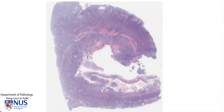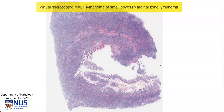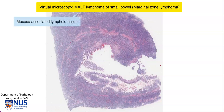Hello. This is a virtual microscopy slide of a case of MALT lymphoma of the small intestine or small bowel. MALT stands for mucosa-associated lymphoid tissue. It is a type of marginal zone lymphoma, which is a low-grade B-cell lymphoma.